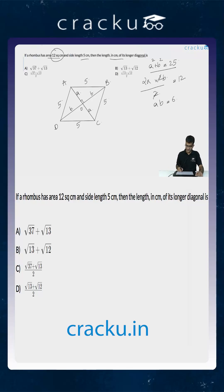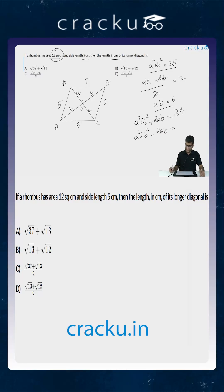We now have a² + b² = 25 and ab = 6. Using the identity (a + b)² = a² + b² + 2ab = 25 + 12 = 37, and (a − b)² = a² + b² − 2ab = 25 − 12 = 13. So a + b = √37 and a − b = √13 (assuming a > b).